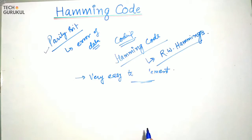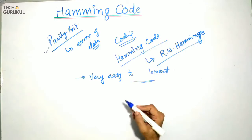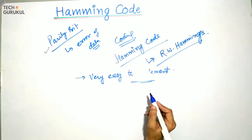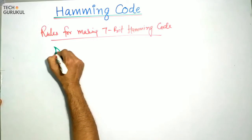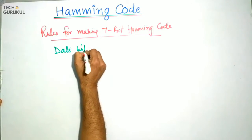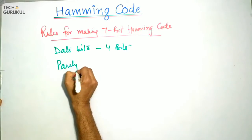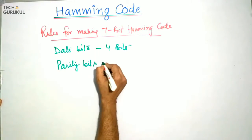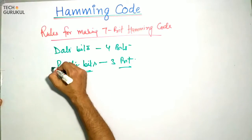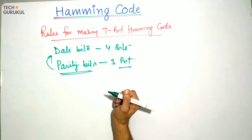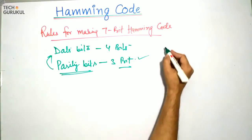When there is a data stream, some additional bits are introduced which are parity bits. These bits are added in a slightly different way compared to the simple parity code. Now let us see the rules for making a 7-bit Hamming code. It contains data bits which we want to transmit — these will be 4 bits — and there will be parity bits. These extra bits are used to detect the error. We have to decide the position of the data bits and parity bits.